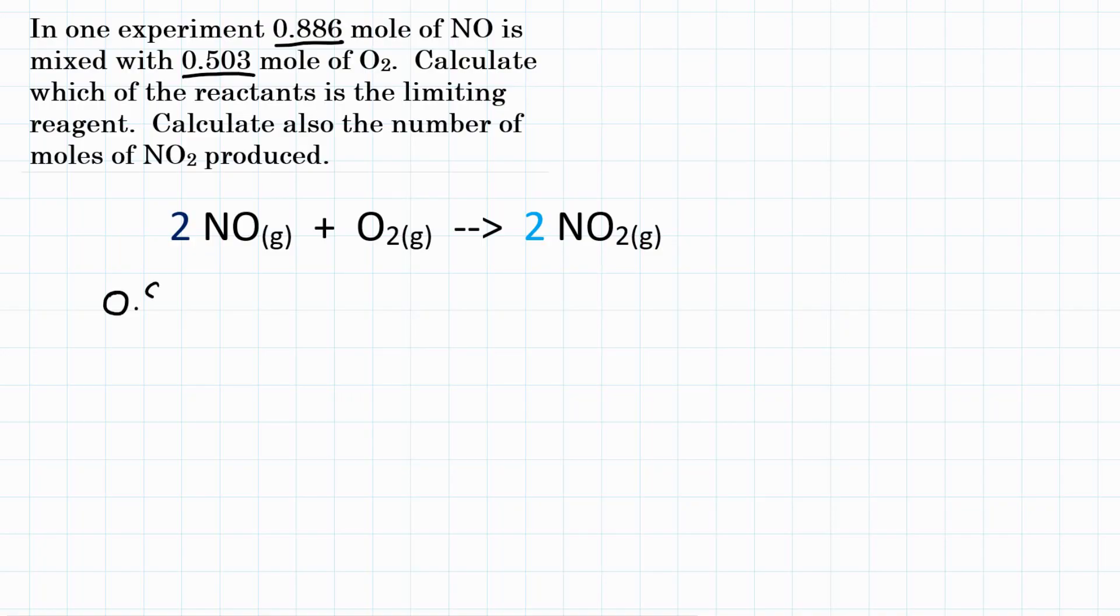And since we're already starting with moles, 0.886 moles of NO and 0.503 moles of O2, and they only want moles of NO2 in the end, this is only going to be a one-step stoichiometry problem.